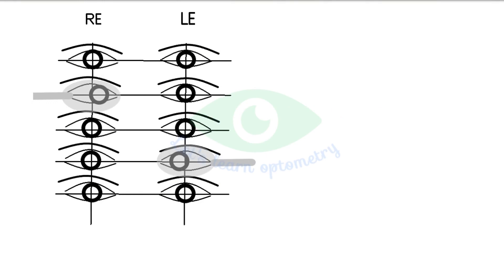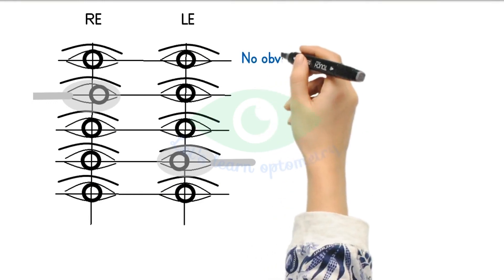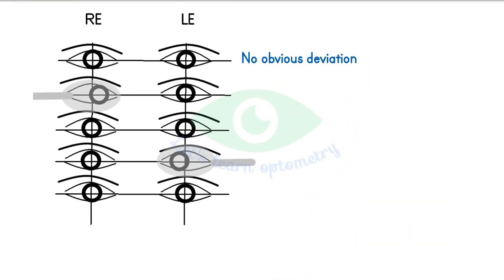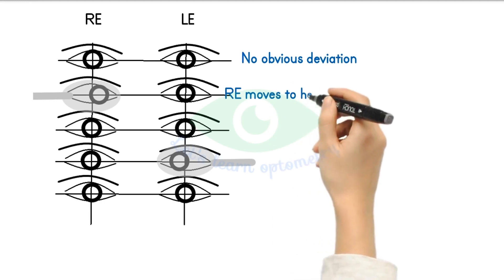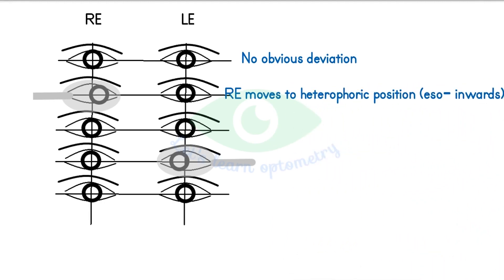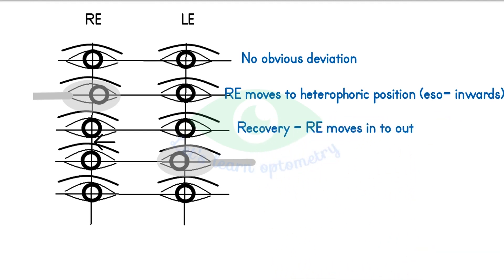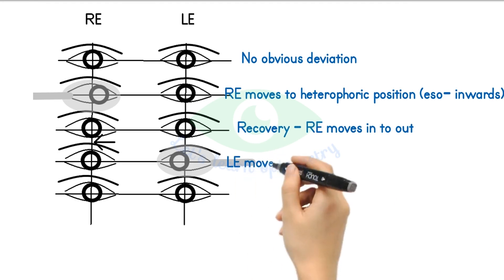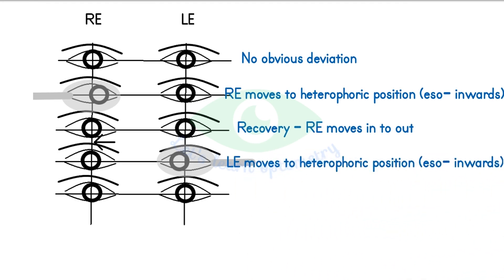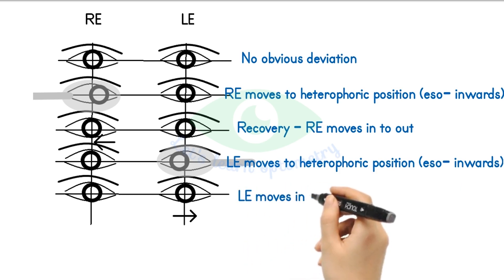In this example there is no obvious deviation during binocular viewing. When we cover the right eye, the right eye under the cover moves inwards. When we remove the cover, the right eye moves from in to out — so it is a case of esophoria. When we cover the left eye, the left eye under the cover moves to a heterophoric position, and after removing the cover it moves from inwards to outwards.